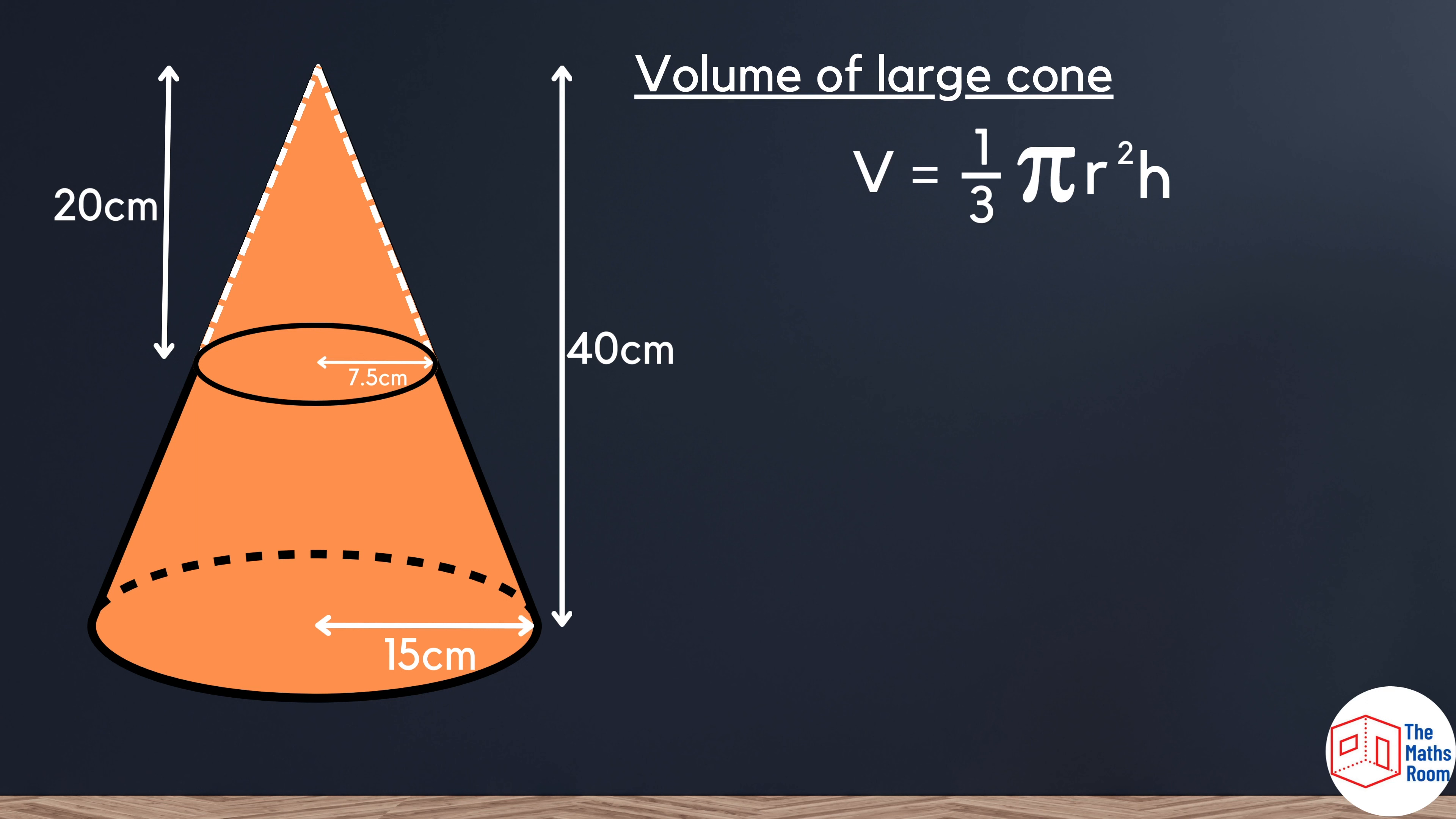From this point on, we're going to use the formula to calculate the volume of the large cone and the volume of the small cone. If we take the volume of the small cone away from the volume of the big cone, we will be left with the frustum's volume.